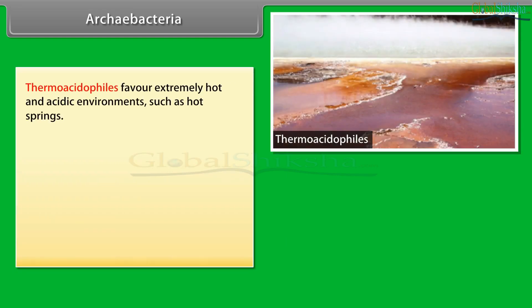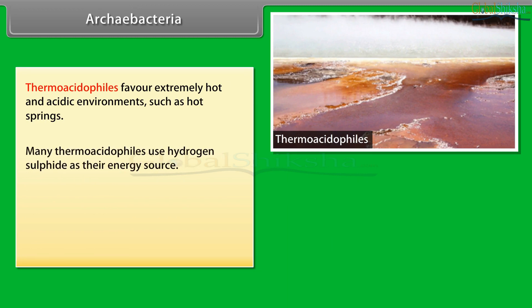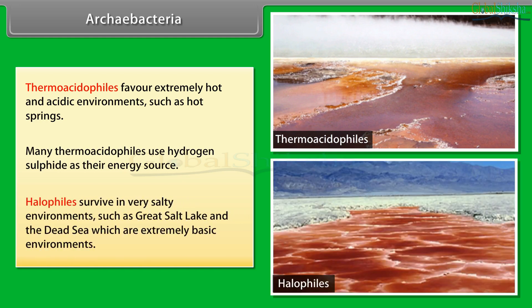Thermoacidophiles favor extremely hot and acidic environments such as hot springs, and many use hydrogen sulfide as their energy source. Halophiles survive in very salty environments such as Great Salt Lake and the Dead Sea, which are also extremely basic environments.